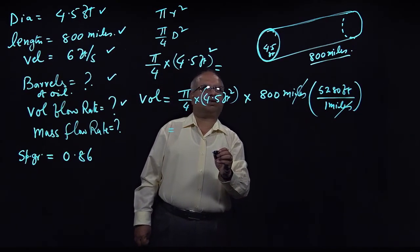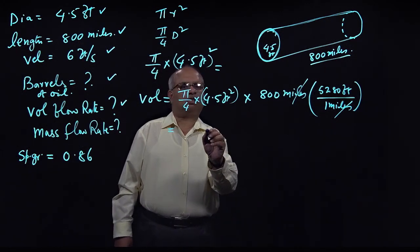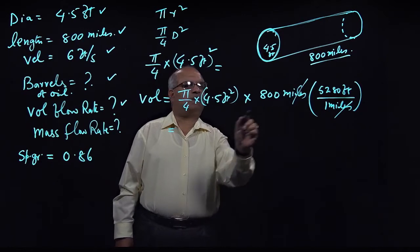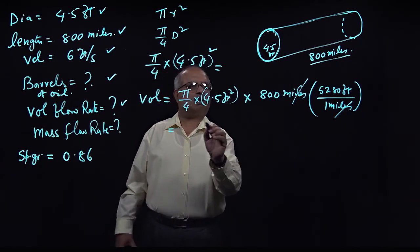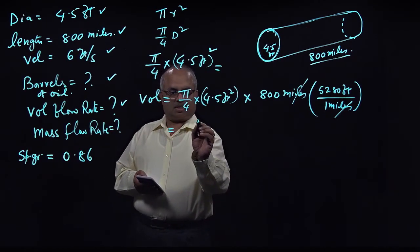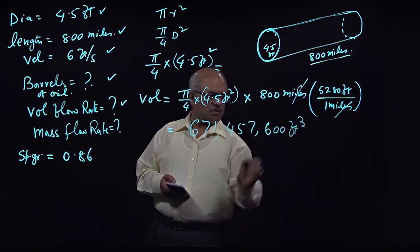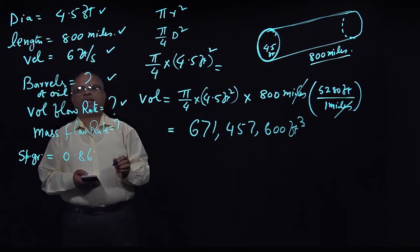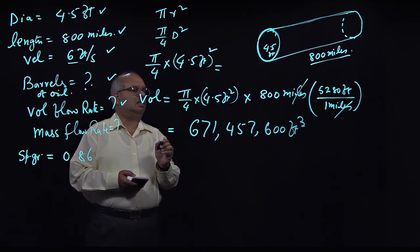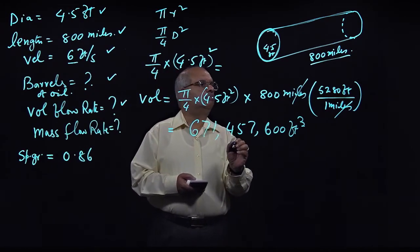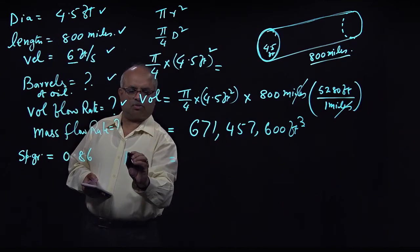The velocity with which the oil is going through is 6 feet per second. We can calculate the volumetric flow rate from that. But first, let's find the volume of the pipe — how much we can store in here. This comes out to be 671,457,600 cubic feet. That is the volume stored in the pipeline.